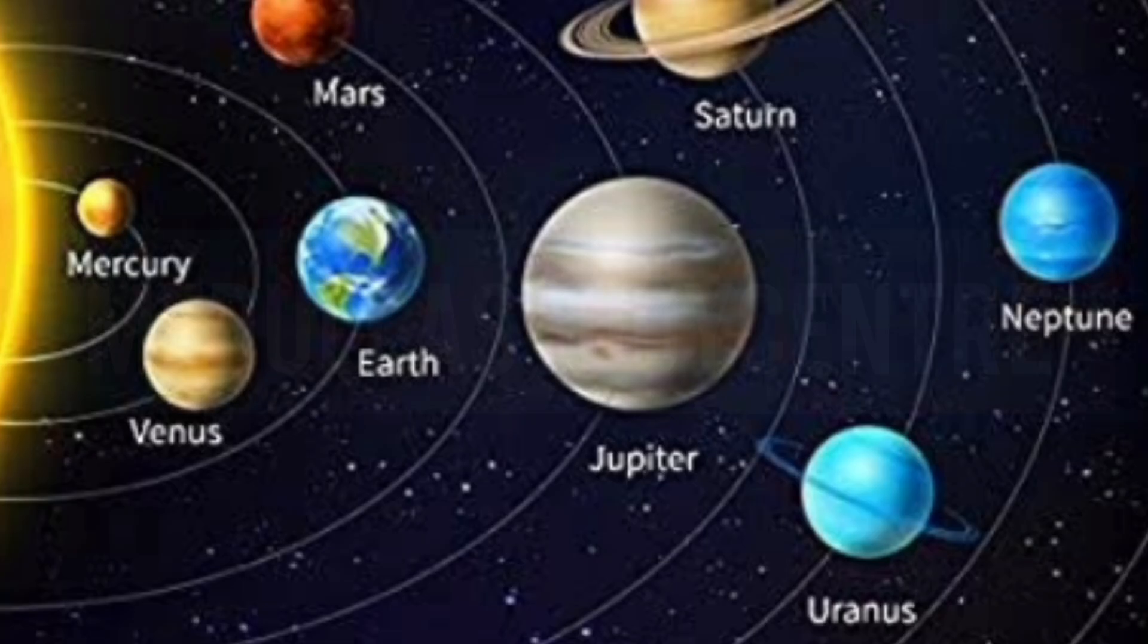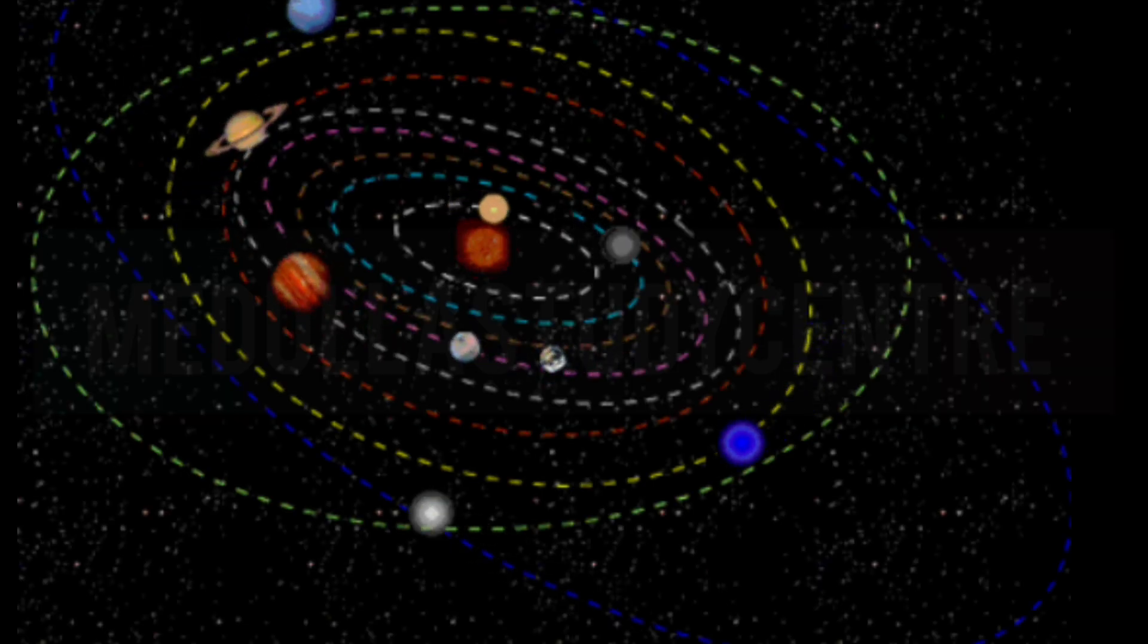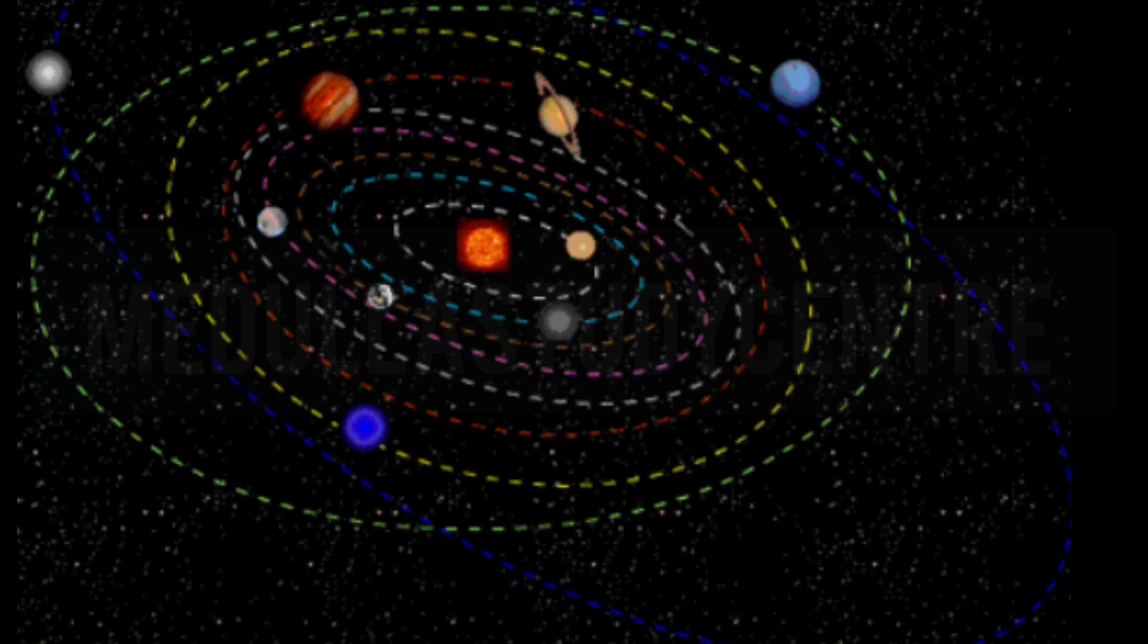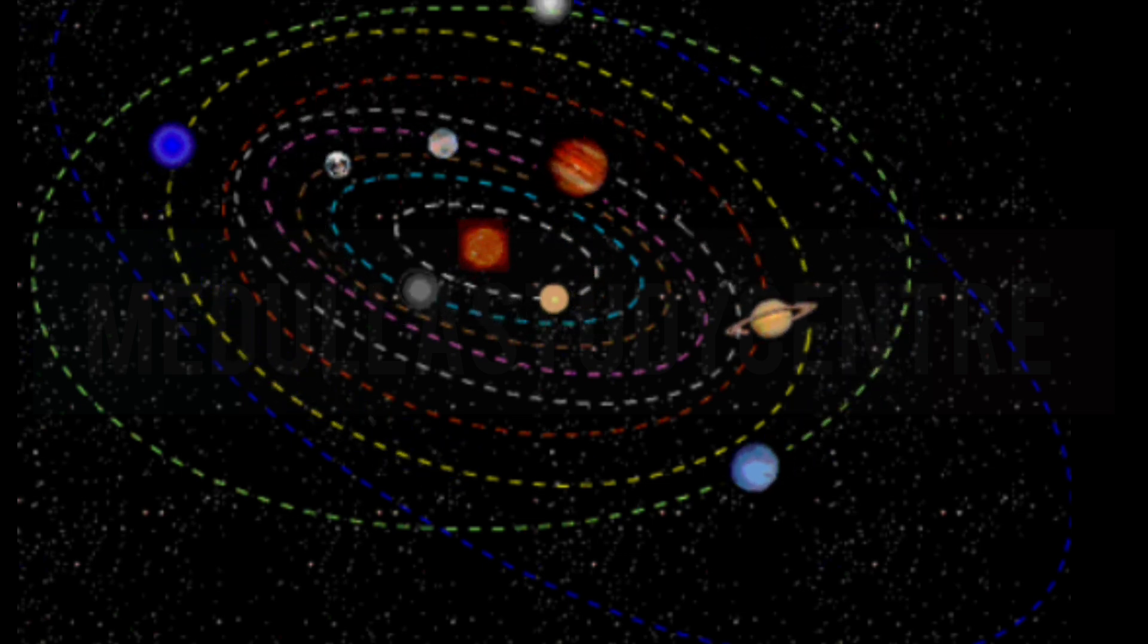Planets. There are eight planets in our solar system. As you can see here, they are Mercury, Venus, Earth, Mars, Jupiter, Saturn, Uranus and Neptune. And all these planets move around the sun in a fixed path. That is called orbit.